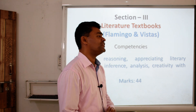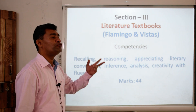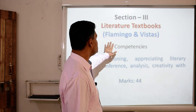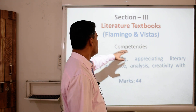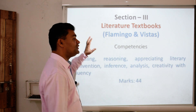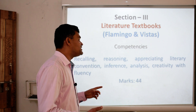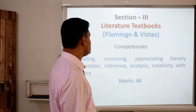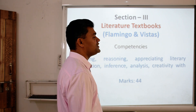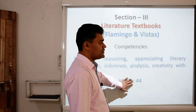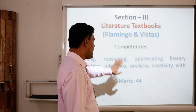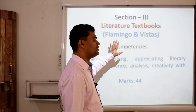Now we come to Section 3, that is literature. For literature we have 2 books. We have covered all 15 lessons for the current session. What they are trying to assess through literature is the competency of a child — how the child is able to recall, reason, appreciate literary conventions, inference, analysis, and creativity with fluency. For this we have 44 marks: 20 marks for reading skill, 16 marks for writing skill, and 44 marks for literature, which amounts to 80 marks.